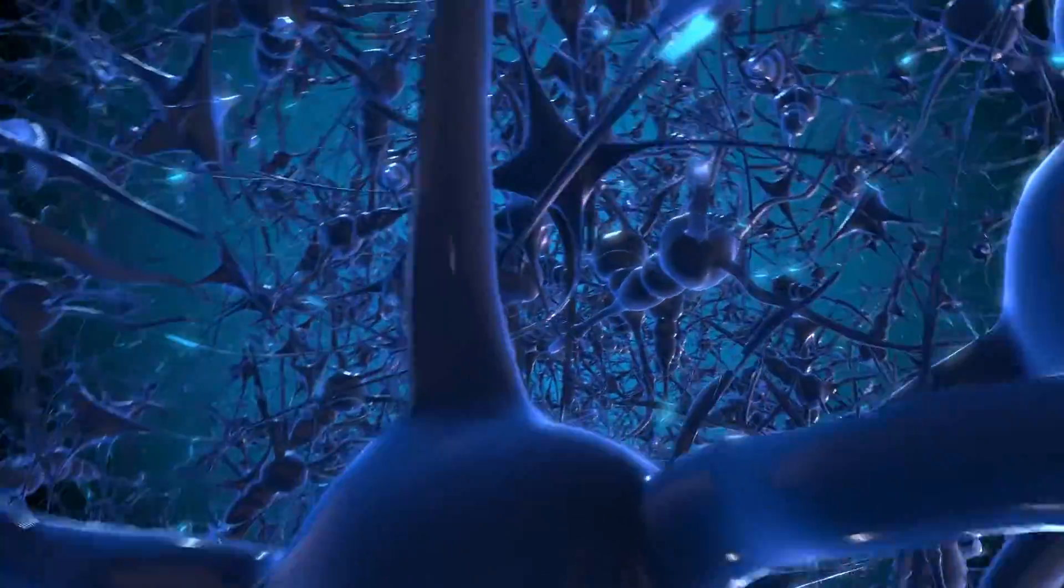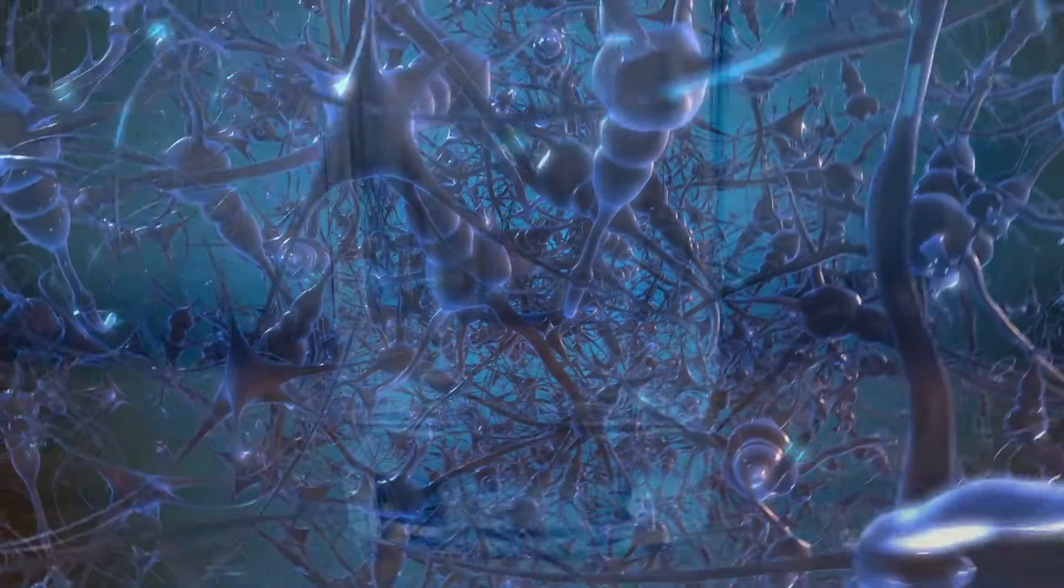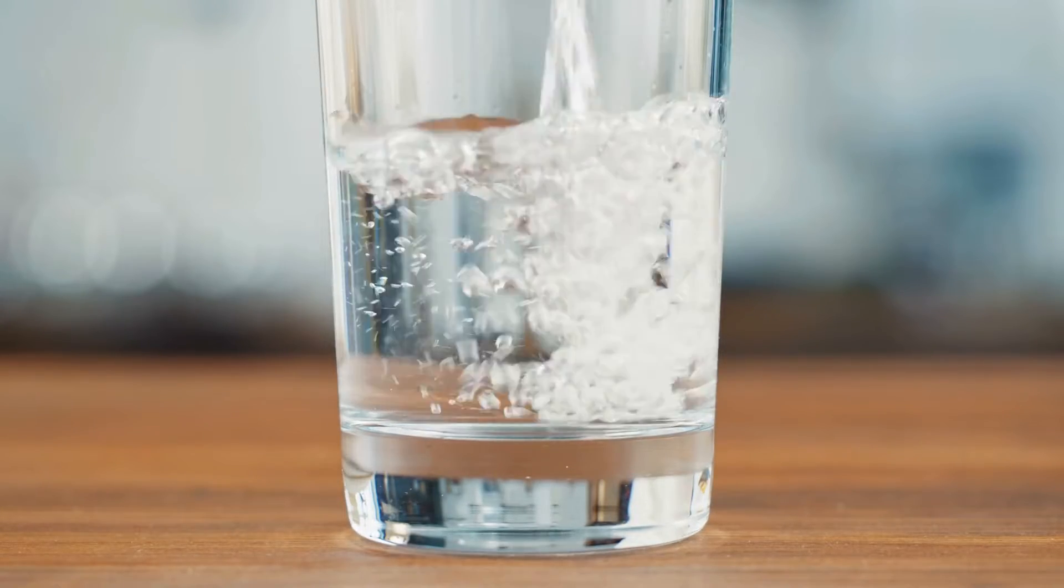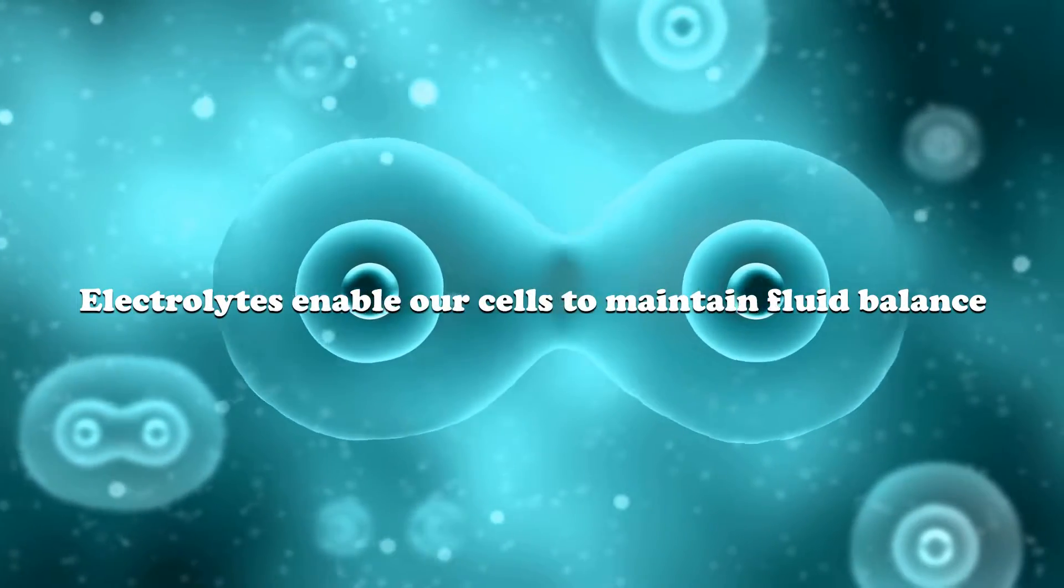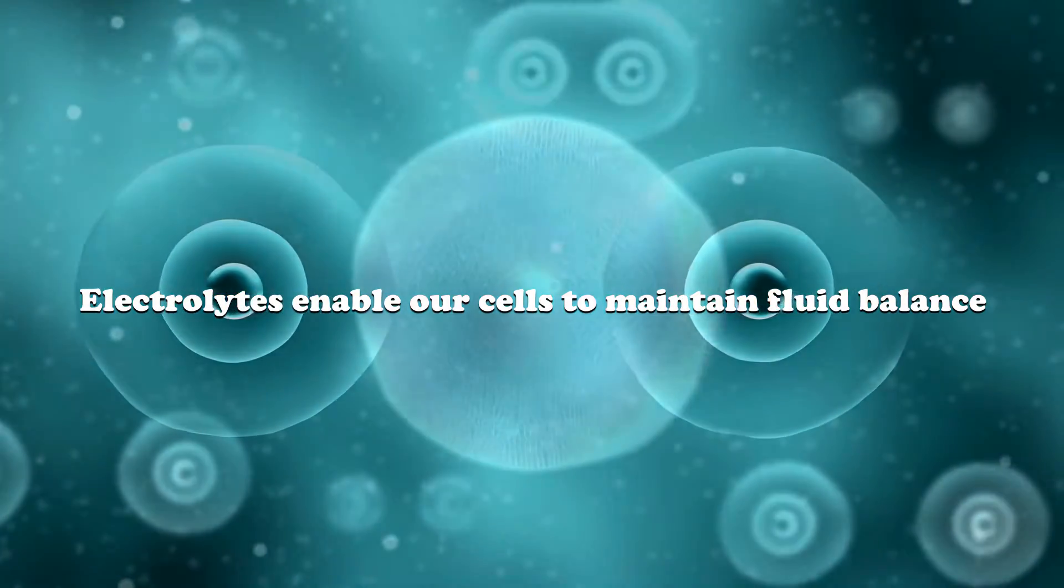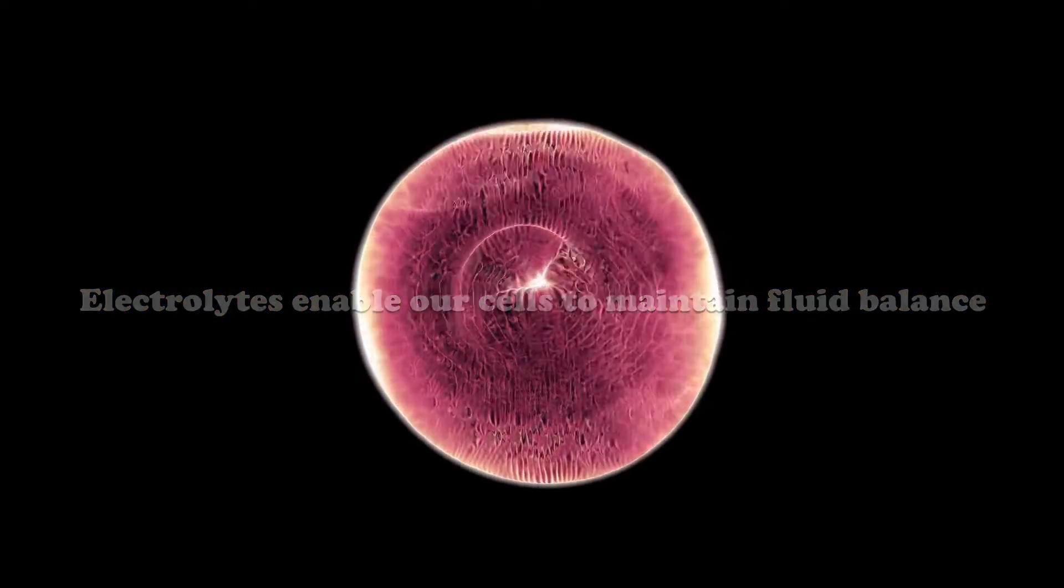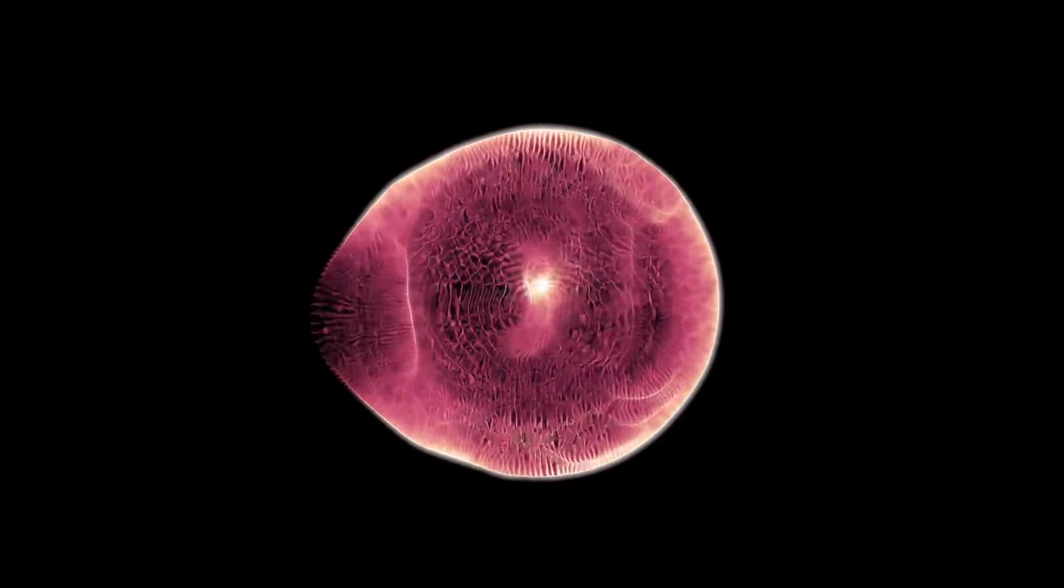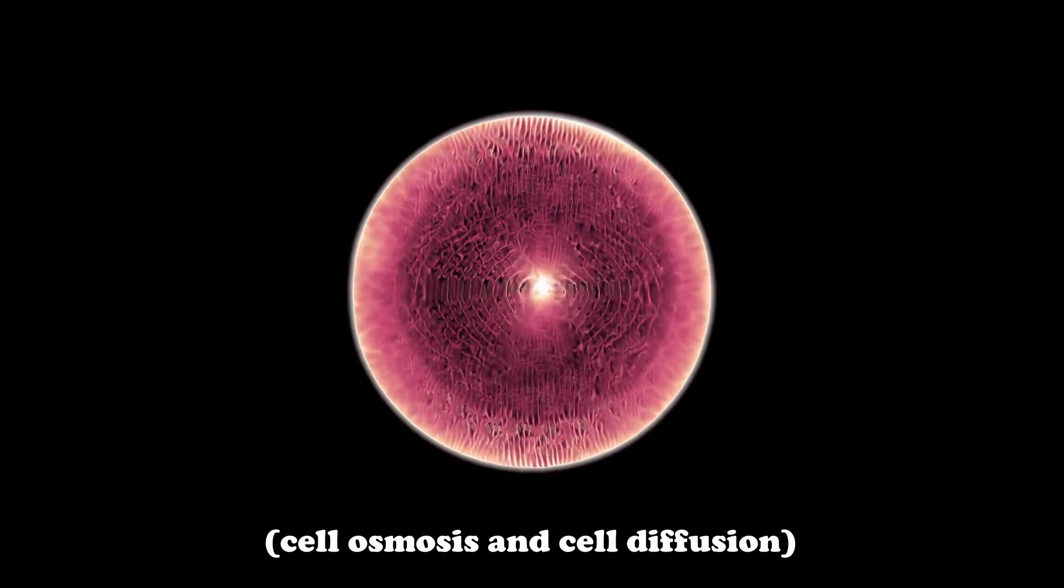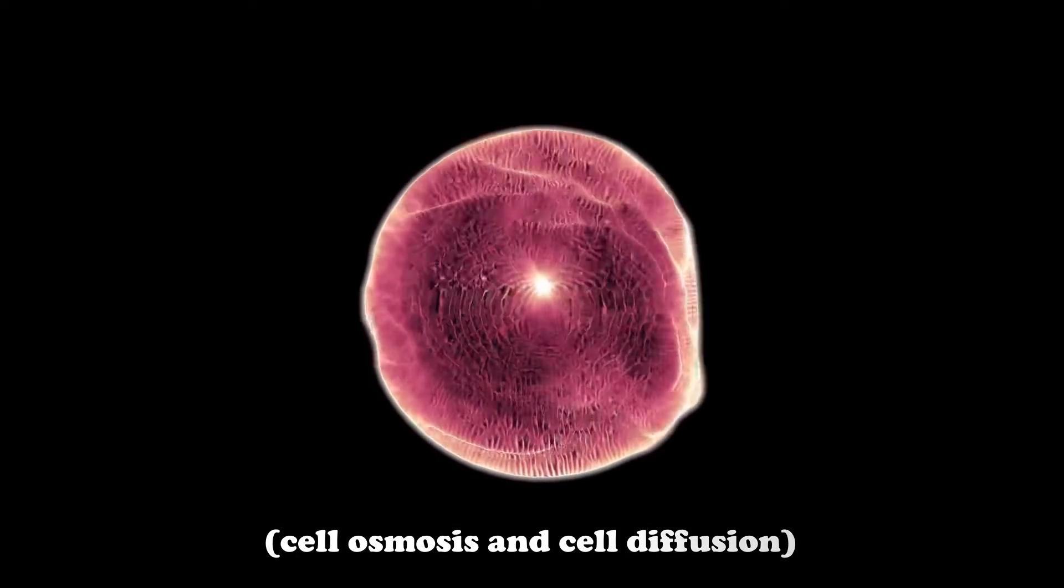Our cells also help to maintain proper hydration and fluid balance throughout our bodies. And the volume of fluid within each cell is always changing because of this. Electrolytes play a key role in this process as well and here's why. The contents of a cell are contained by something called the cell membrane.